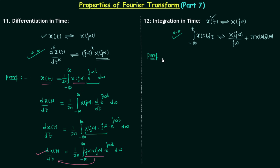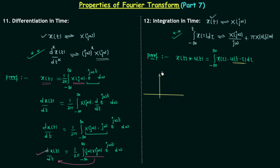To prove this property, I will consider the convolution of x(t) with u(t), which equals the integration from minus infinity to infinity of x(τ)·u(t−τ) dτ. We will focus on u(t−τ) to understand this integration clearly by obtaining its waveform step by step. First we plot u(τ): when τ is from minus infinity to 0, u(τ) equals 0; when τ is from 0 to infinity, u(τ) equals 1.